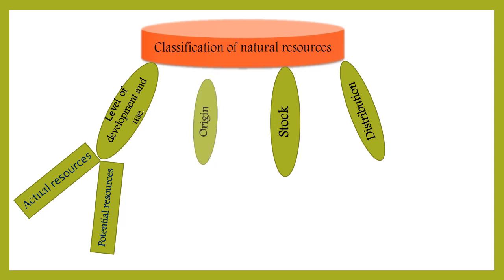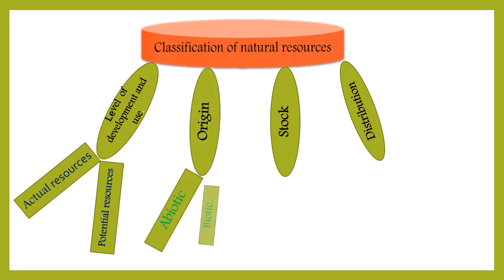Depending on the origin, we have two types of resources: abiotic and biotic. Abiotic resources are non-living, while biotic resources are living. For example, soil, rocks, and minerals are abiotic, whereas plants and animals are biotic resources.